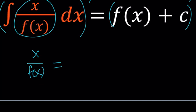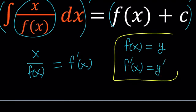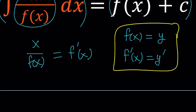That equals the derivative of f of x plus c. Since c is a constant, its derivative is 0, and the derivative of f of x can be written as f prime of x. So let's simplify by writing f of x as y — set f of x equal to y — and then write f prime as y prime. Under this notation things look a little simpler, so we write this as x over y equals y prime. This is the differential equation that we're going to solve.